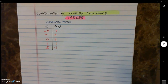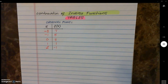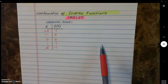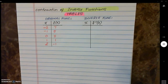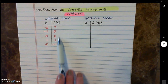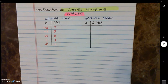Go ahead and flip to the next page because we're continuing our discussion on inverse functions — but this time using tables and sets of ordered pairs. How can we generate the inverse function from a given table? What you do is switch domain and range: all your domain values become the range, and all the range values become the domain, making sure you pair them up correctly.